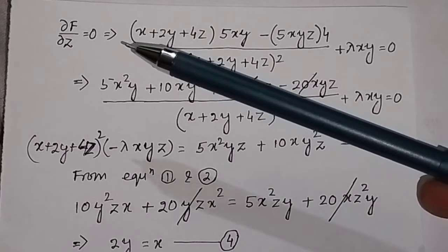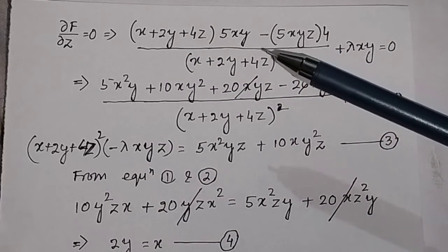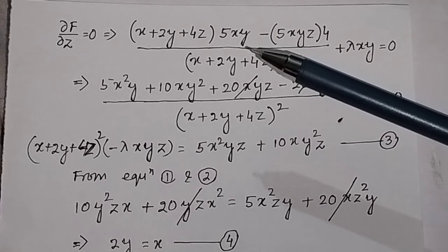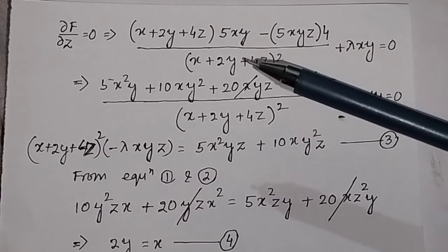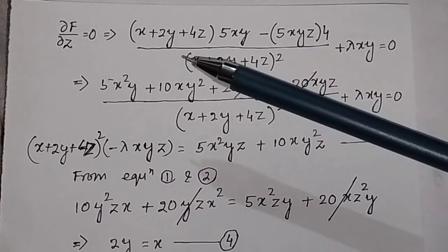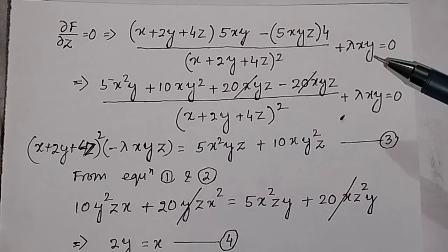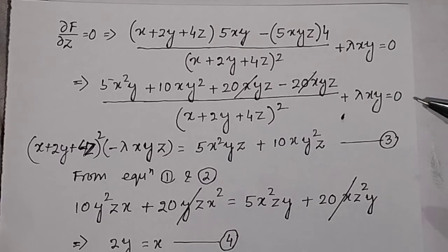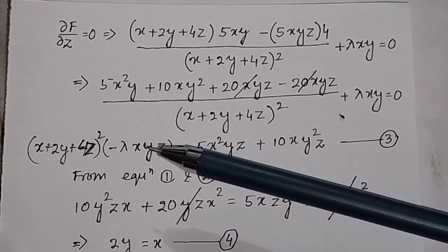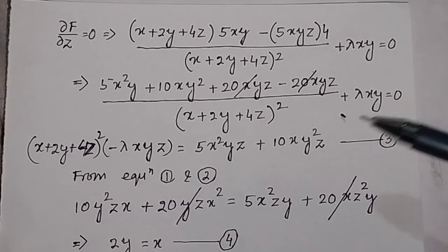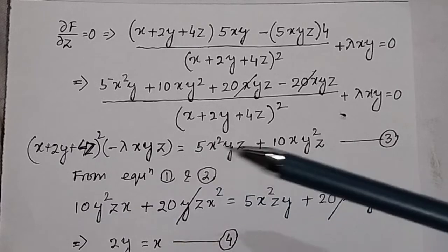Now take the partial derivative of F with respect to z and set it equal to 0. Using the quotient rule — v times the derivative of u minus u times the derivative of v, all divided by v squared — the derivatives of the first and second terms are computed. Taking the result to the right-hand side, multiplying by (x plus 2y plus 4z) squared, and multiplying z on both sides gives equation 3.